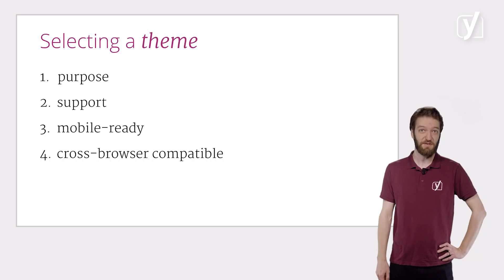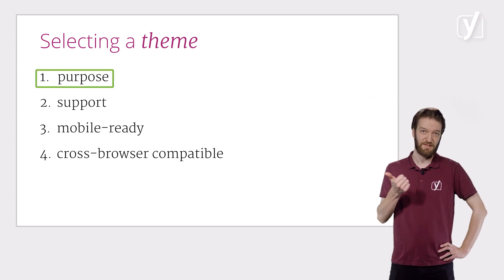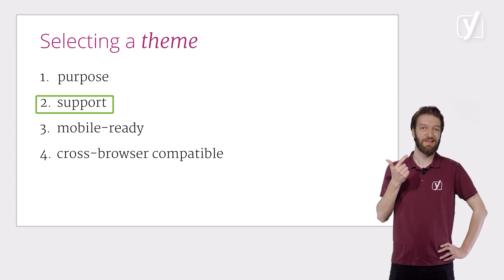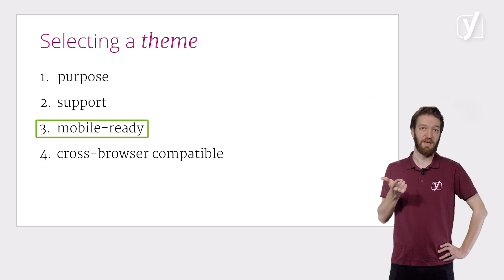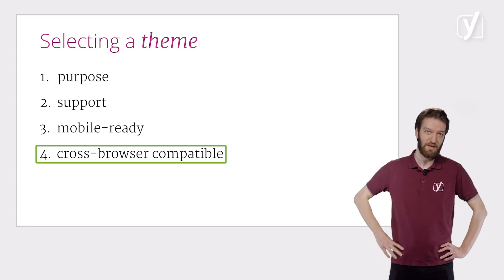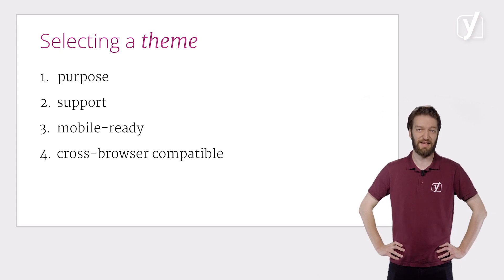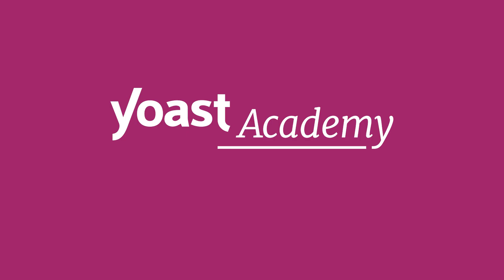So, in this video we mentioned four things to keep in mind when selecting a theme: pick a theme that fits the purpose of your website; consider whether you need a theme that offers support; and make sure that your theme works properly on mobile devices and all popular browsers. Once you pick your theme, the next step is to install it. In the upcoming screencast, we'll show you exactly how to do this. Let's do this.